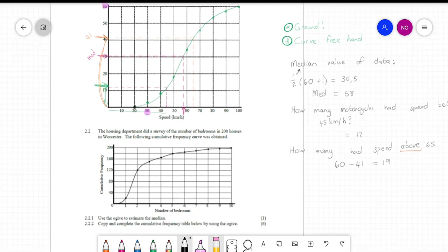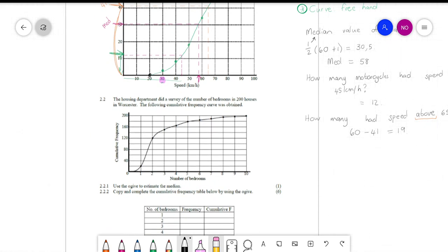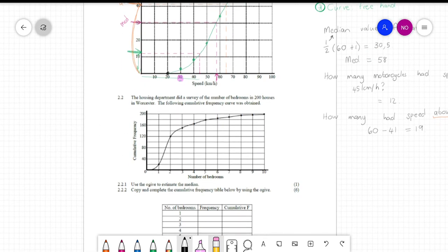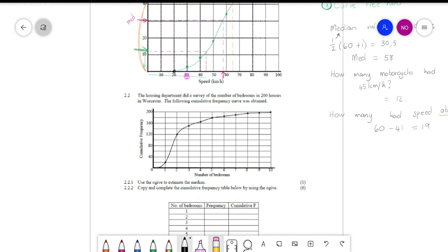So what you need to do for 2.2 is similar to 2.1. If you do 2.2.1 quickly, and just to estimate the median. So remember, 200 houses took part in this, and then I'll help you to do 2.2 to fill in a table using an ogive.